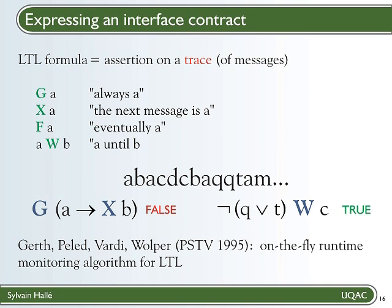So if we have a trace of messages A, B, A, C, D, etc., then the first LTL formula at the left of the picture states that if a message is A, then the next message is B, and this must always be true since we have a G in front of the expression. We can check that on the trace this formula is false, since the third symbol is an A but it's followed by a C. One can easily check that the second LTL formula is true on that trace.